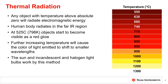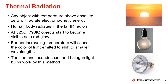Further increasing the temperature causes the color of light emitted to shift to smaller wavelengths, as shown on the right. Thermal radiation is the process responsible for light emitted by the sun, as well as by incandescent and halogen light bulbs.